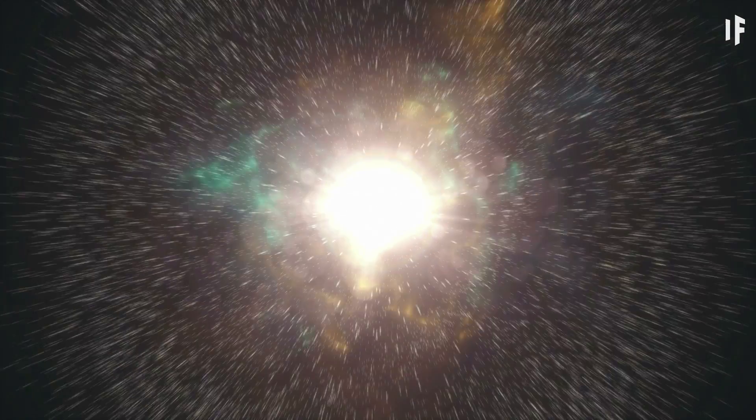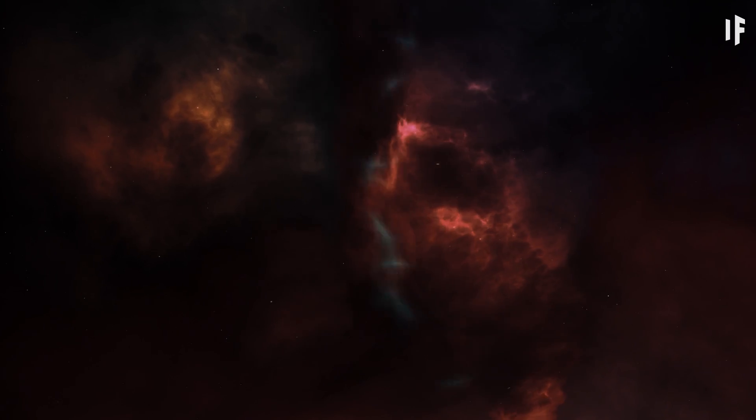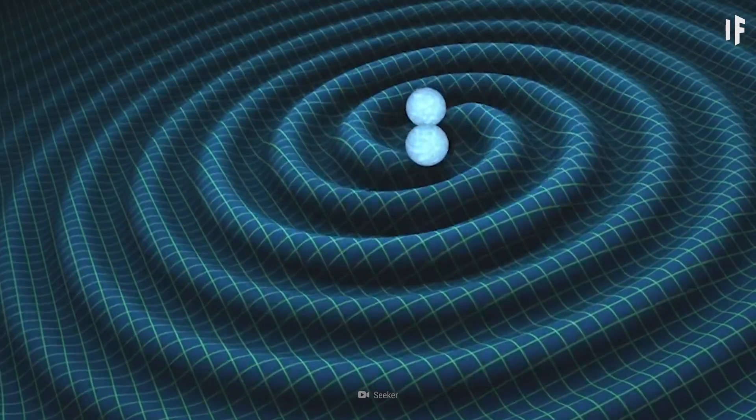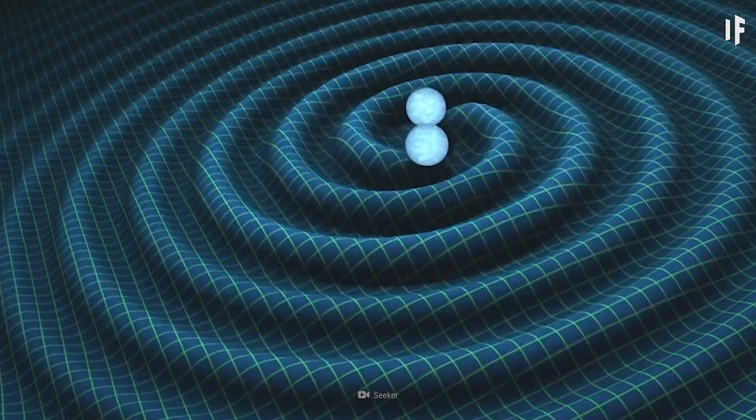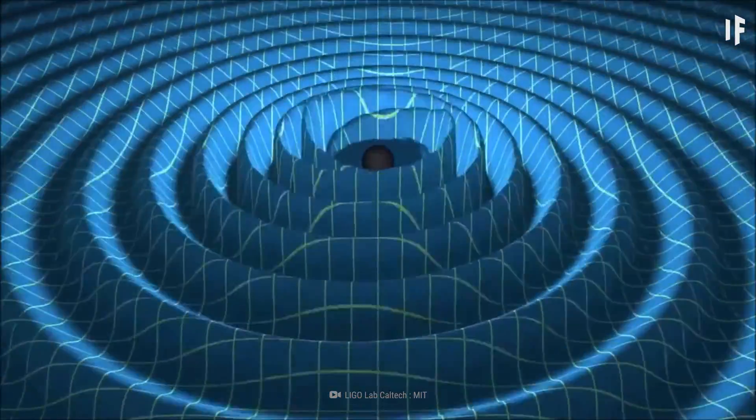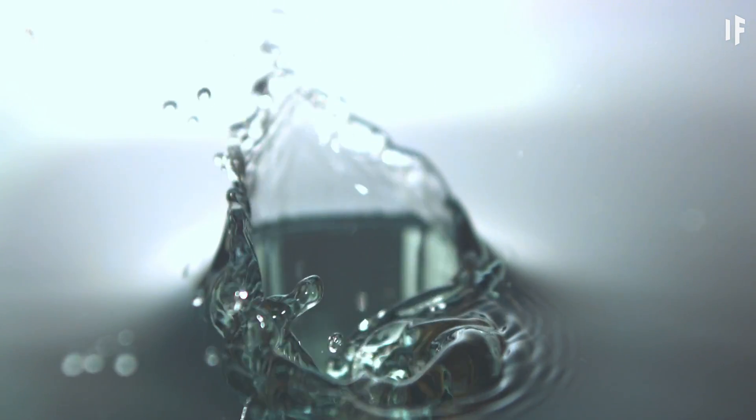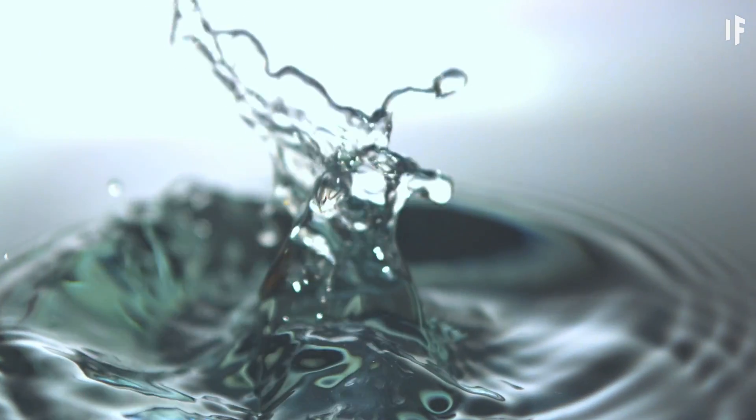These waves travel at the speed of gravity equal to the speed of light, and emanate outward in all directions. Like a rock being thrown in a pond, the ripples it creates dissipate over great distances and become smaller and smaller.